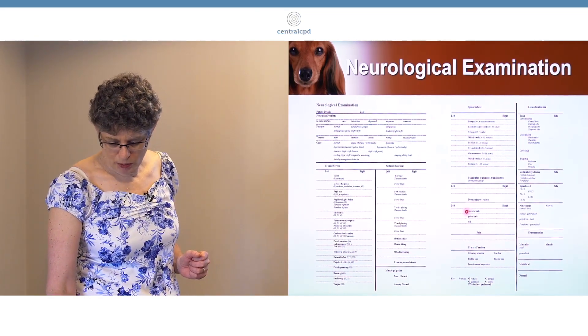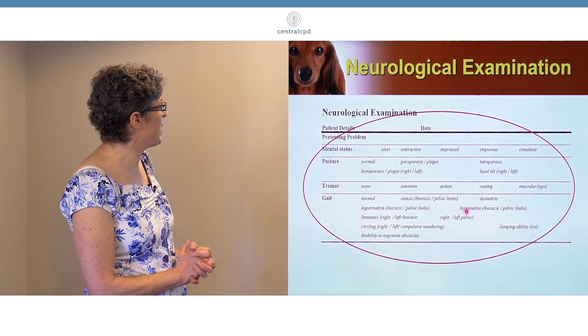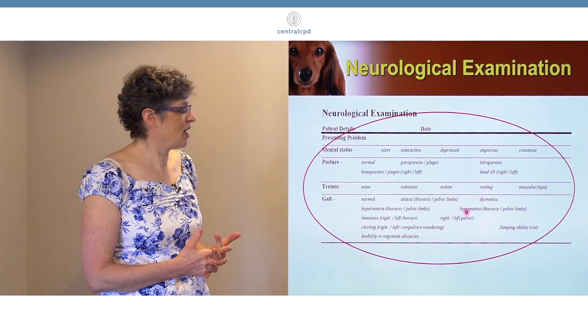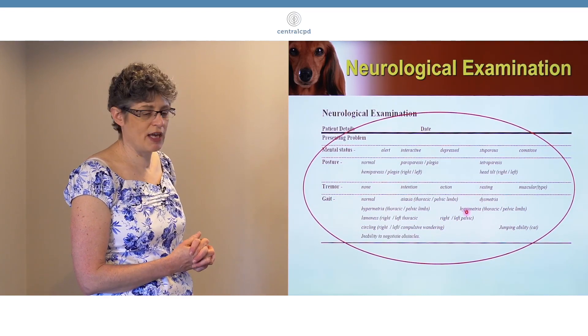But for assessing spinal cord disease, by far the most useful part is the very first bit: assessing the gait and posture of the animal.